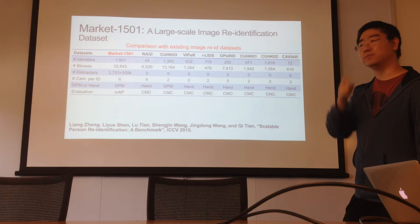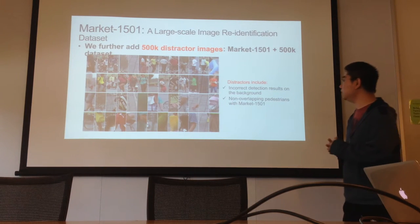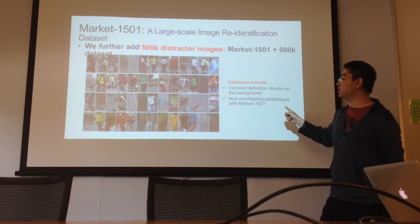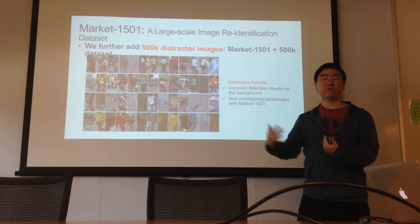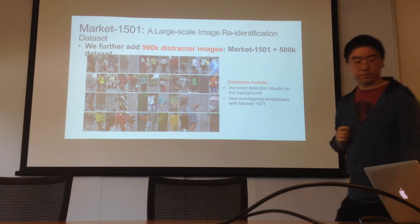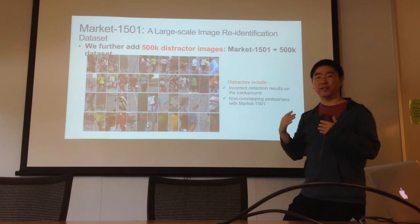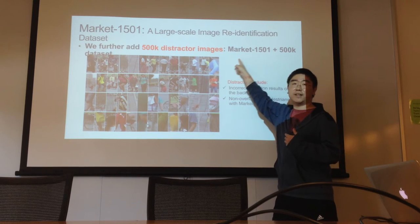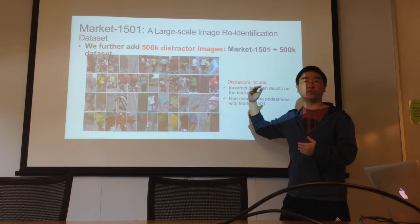What are distractors? The distractors include some incorrect, false-positive detection results on the background, such as these images. They also include some non-overlapping pedestrian detections that are not part of the main Market-1501 dataset — other pedestrians that do not overlap with the 1,501 identities. So finally we have the Market-1501 dataset plus a 500k distractor set. These persons do not appear in the main dataset — they are not the queries and not what we want to search for.